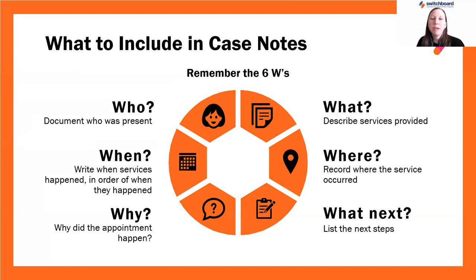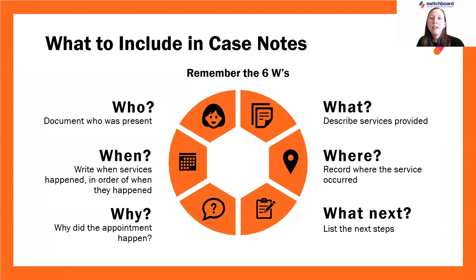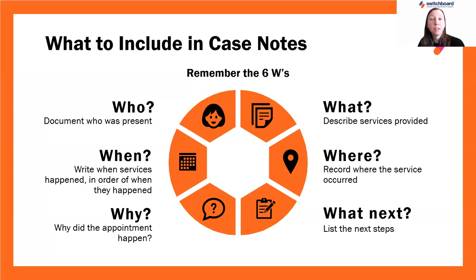Document why the meeting happened — was this a scheduled meeting to discuss the client's employment goals, or was this an unscheduled meeting where the client walked in with an urgent need like rental assistance? And finally, what next — list any next steps you and your client are planning, as well as when you plan to meet again. It's also important to document when a client no-shows to a scheduled appointment, and any time that you call or talk to a client on the phone. These notes can be brief — even just one sentence — and documenting them will help you recognize patterns with your clients and track all the outreach work you're doing.